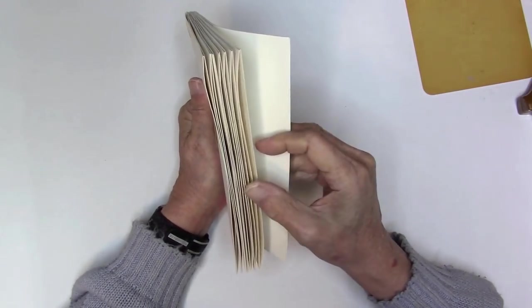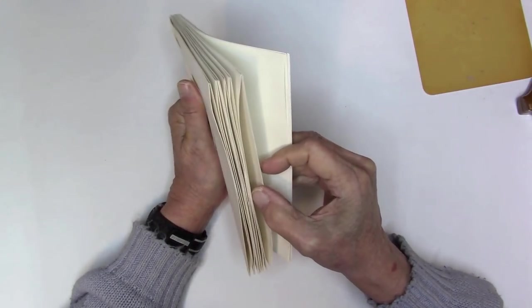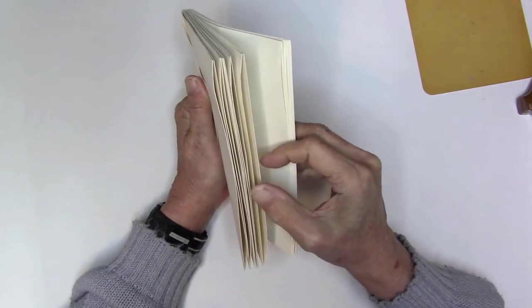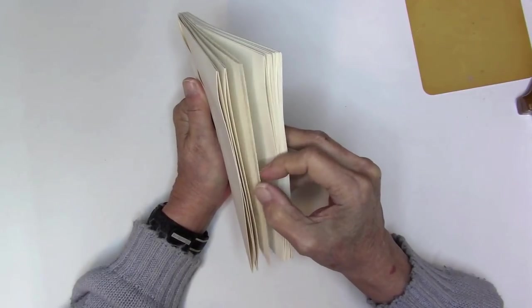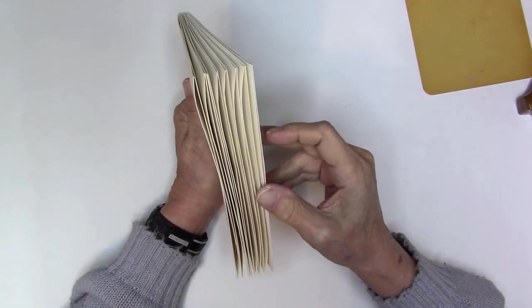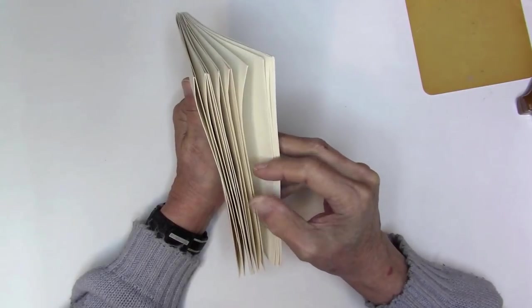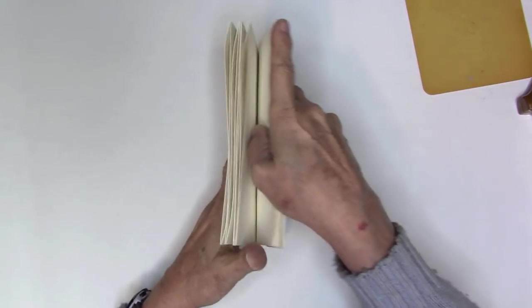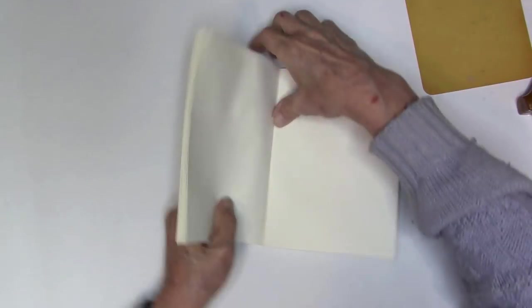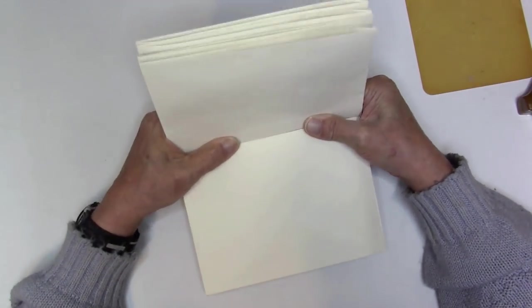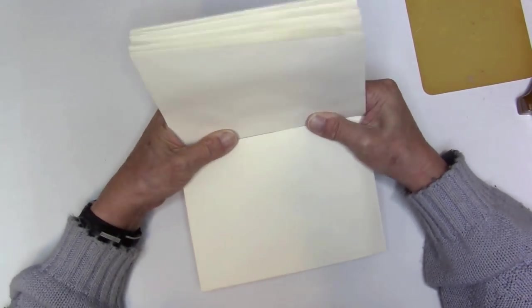So I have 2, 4, 6, 8, 10, 12, 14. I still have 16. So 8 would be halfway. And at this point is where I would do my stitching.